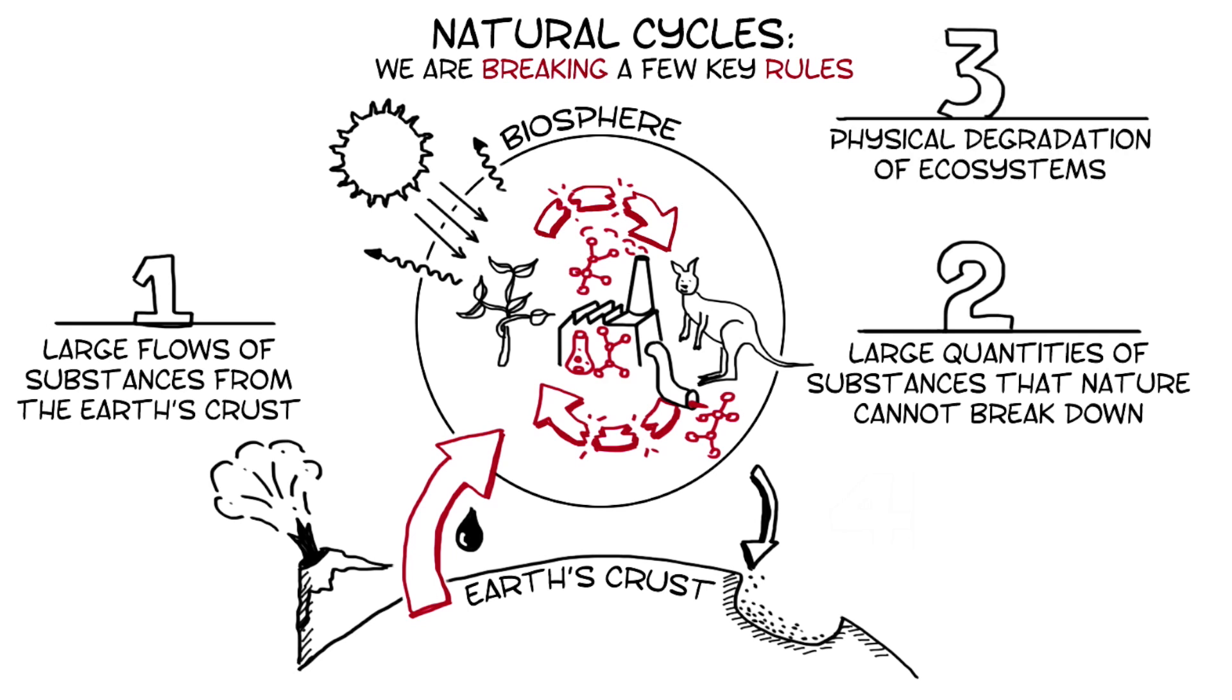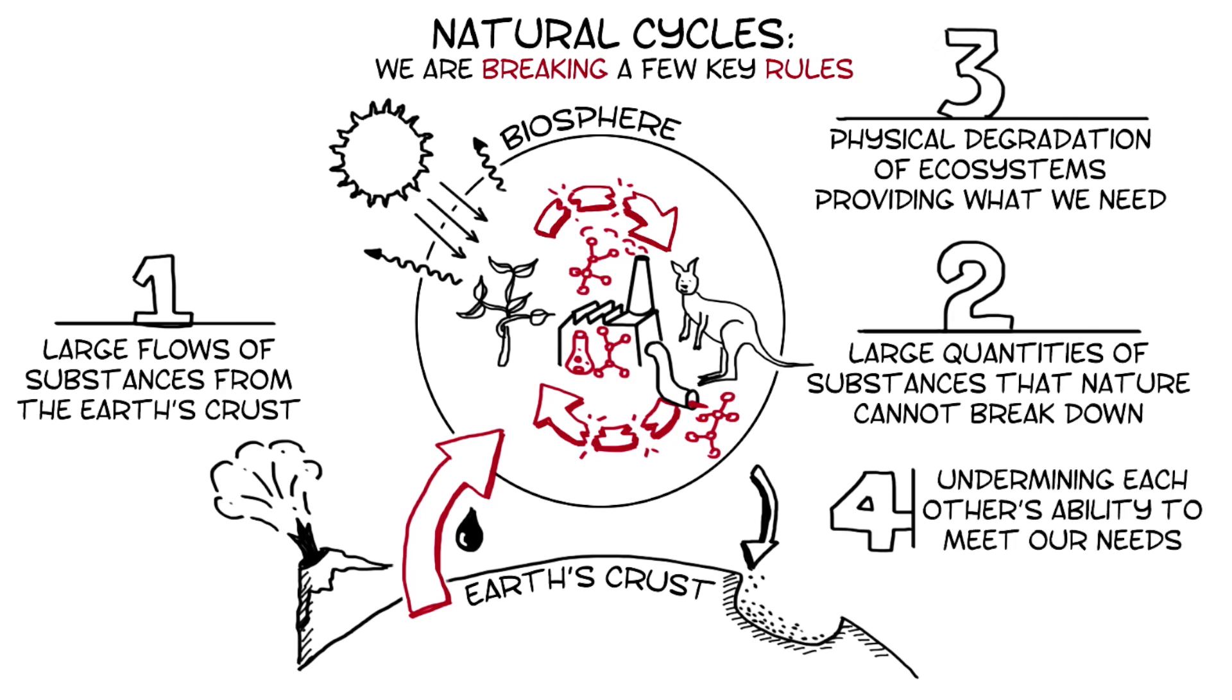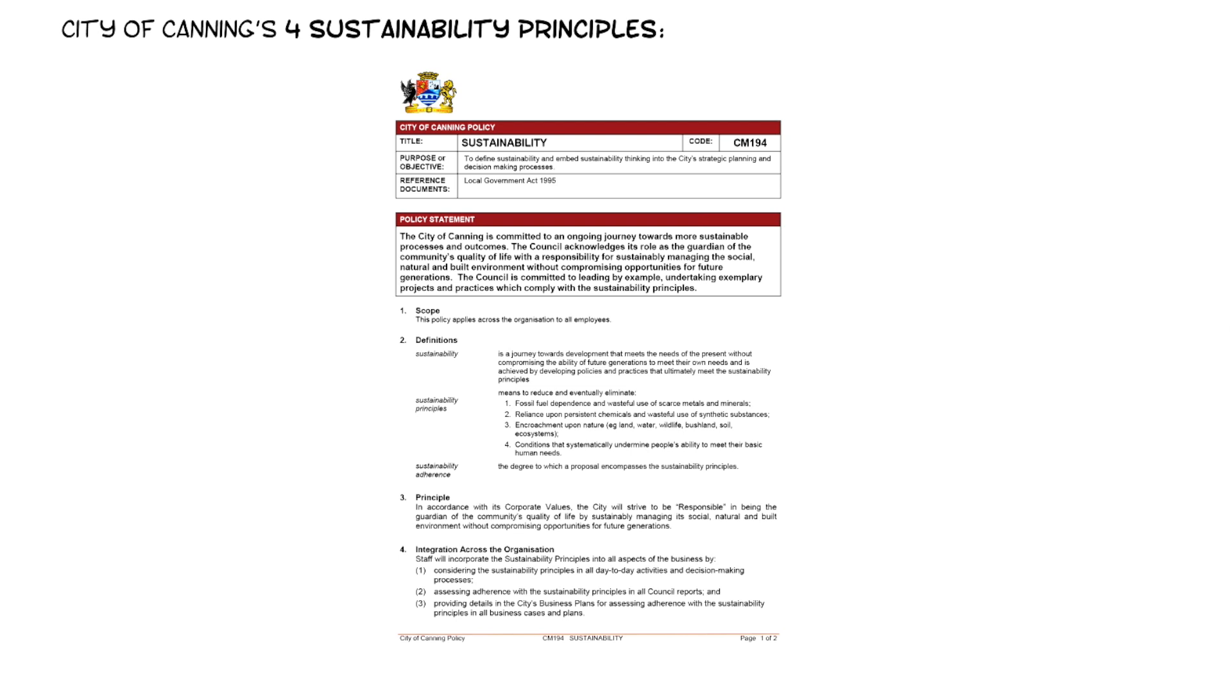This includes not only things like wood for guitars, but larger processes like water filtration and climate regulation. In turn, this means that we're undermining each other's ability to meet our needs. In order to address these four issues, at the City of Canning, we've based our sustainability policy on these four principles. Our policy asks that when making decisions or planning for the future, all officers at the City of Canning work towards reducing and eventually eliminating...